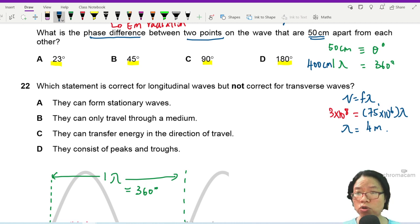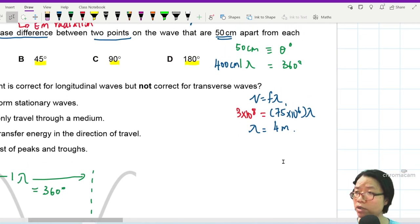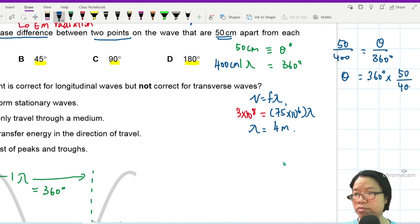So we can use ratio. You can do something along the lines of 50 over 400 will be equal to theta over 360. So you want to find 50 over 400, theta over 360. So you want to find theta now. That would be 360 multiplied by 50 over 400.